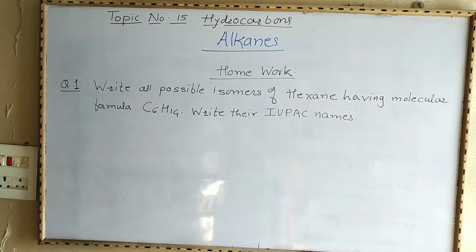Homework for you: write all possible isomers of hexane having molecular formula C₆H₁₄ and write their IUPAC names.